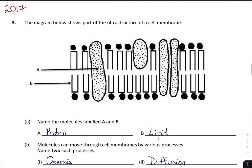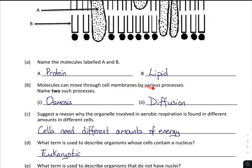You're given a diagram in 2017 and asked to label parts A and B. B is the lipid tail — or just 'lipid' is fine — and A is protein. This is a cell membrane, referred to as a phospholipid, which means it consists of proteins and lipids, and lipid contains two fatty acids and one phosphate. Molecules can move through cell membranes by various processes — you could say osmosis, diffusion, or active transport. There are three in total.